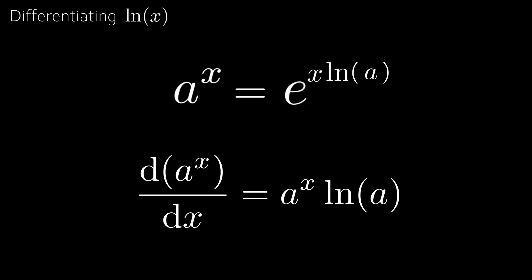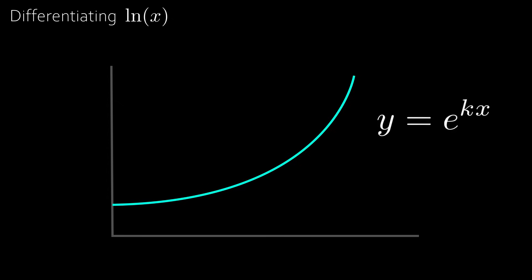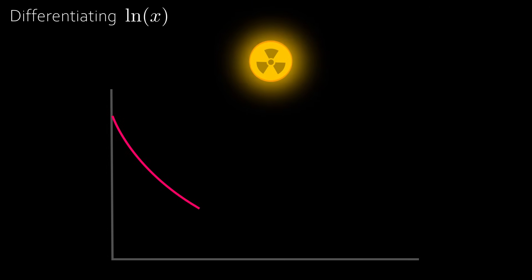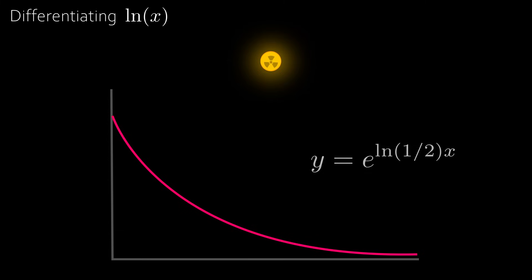That constant ln(a) is exactly the constant k from before — so instead of calculating k from the limit, we now know it should be ln(a). This is why exponential functions are always written as e^(kx) rather than aˣ. As a real-life example, radioactive decay or half-life: over some period of time the mass is halved, giving y = (1/2)ˣ. We can rewrite this as y = e^(x · ln(1/2)), which is e^(−0.693...x), and now we can work with it analytically.